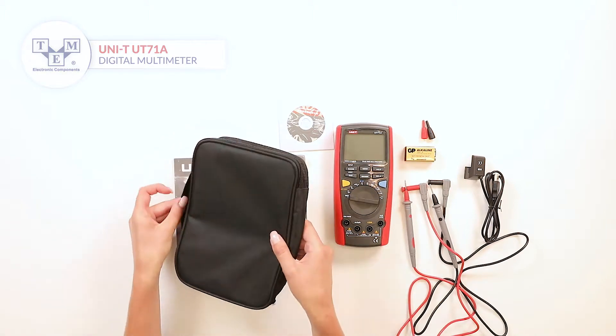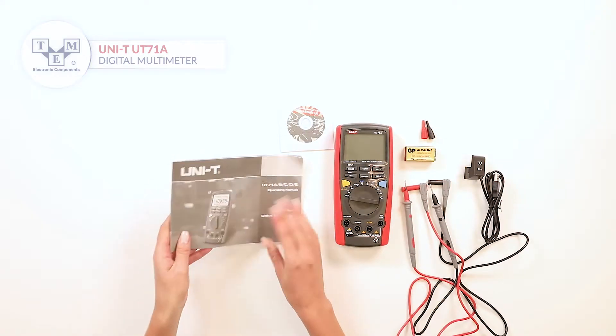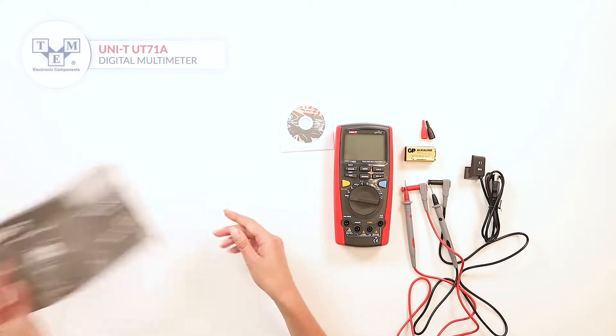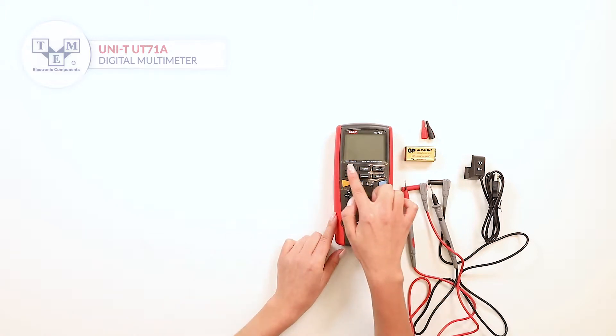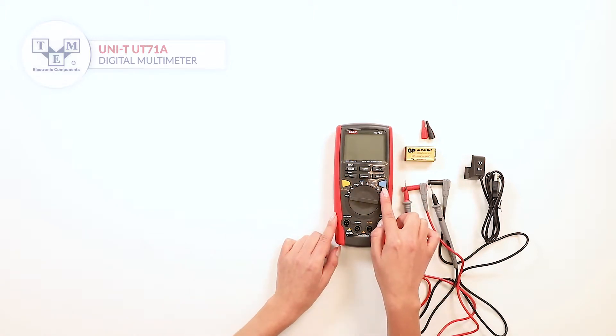The meter comes with a carrying bag, user's manual, a CD-ROM, tip caps, USB interface cable and test leads. Additional functions such as HOLD, MIN, MAX and RELATIVE are also included.